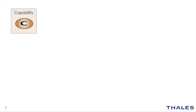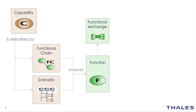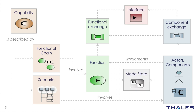It all starts with capabilities. Capabilities are high-level services or abilities of the system. They are described by functional chains and scenarios. Functional chains and scenarios involve functions that are connected to each other using functional exchanges, which represent the dependencies between functions. Functions and functional exchanges are allocated to structural elements — actors, components, component exchanges. Structural elements can have mode or state machines defining which functions are available or not available in a given mode or state.